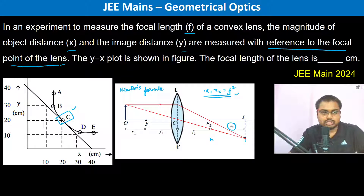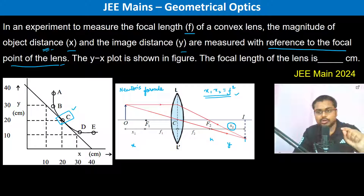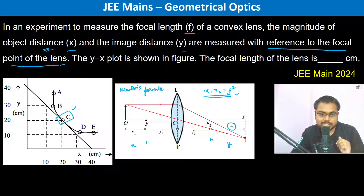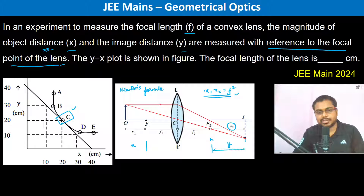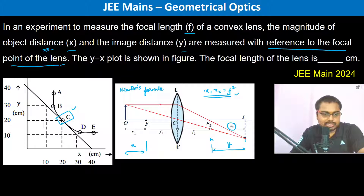The object distance is x and the image distance is y. These are measured not from a single focus, but from the respective focal points of the lens — for the object, this is f1, and for the image, this is f2. So this gives us y and x respectively, and we can solve using either approach. By Newton's formula, x1 times x2 equals f squared.